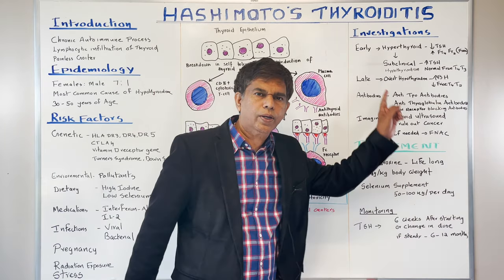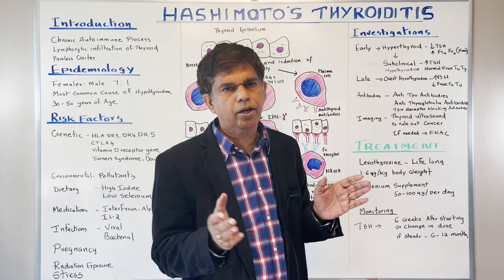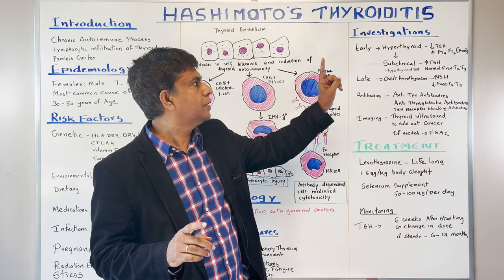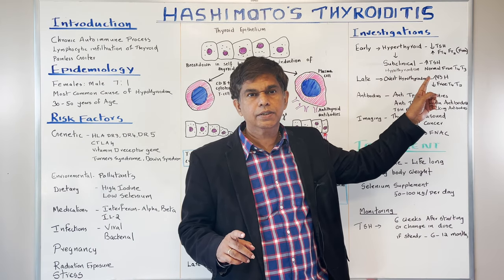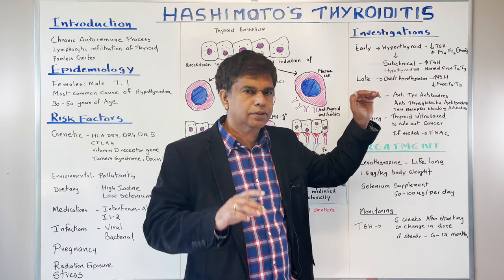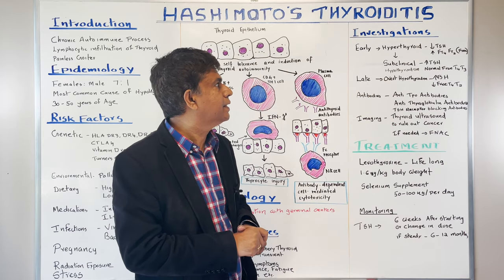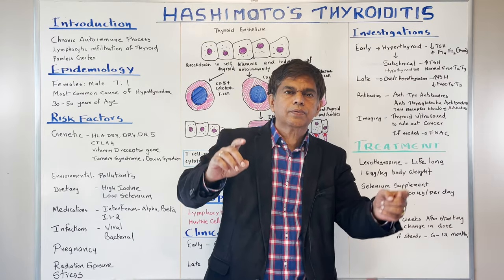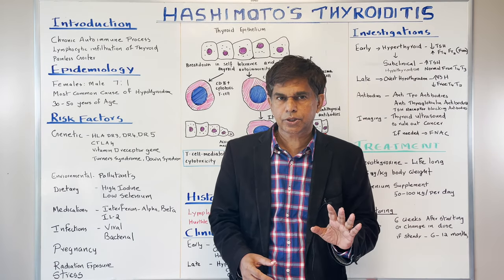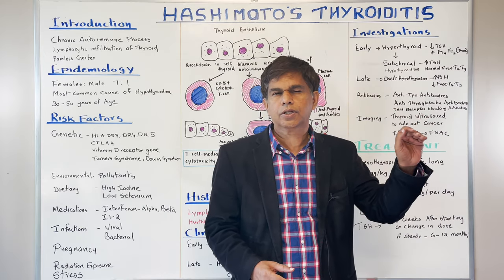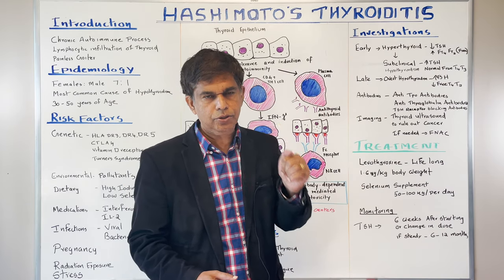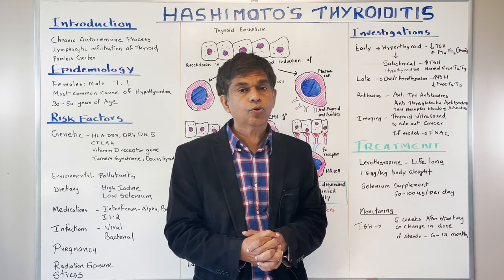Now let's look at the investigations. It is a little complicated because the early and late stages show different pictures. In the early stage, you can have a hyperthyroidism picture — decreased TSH with increased free T4 and free T3. Then this changes to subclinical hypothyroidism, where TSH is increased but free T4 and free T3 are still normal. Finally, overt hypothyroidism presents with increased TSH and decreased free T4 and free T3. You should check TSH first, then free T4 and free T3.